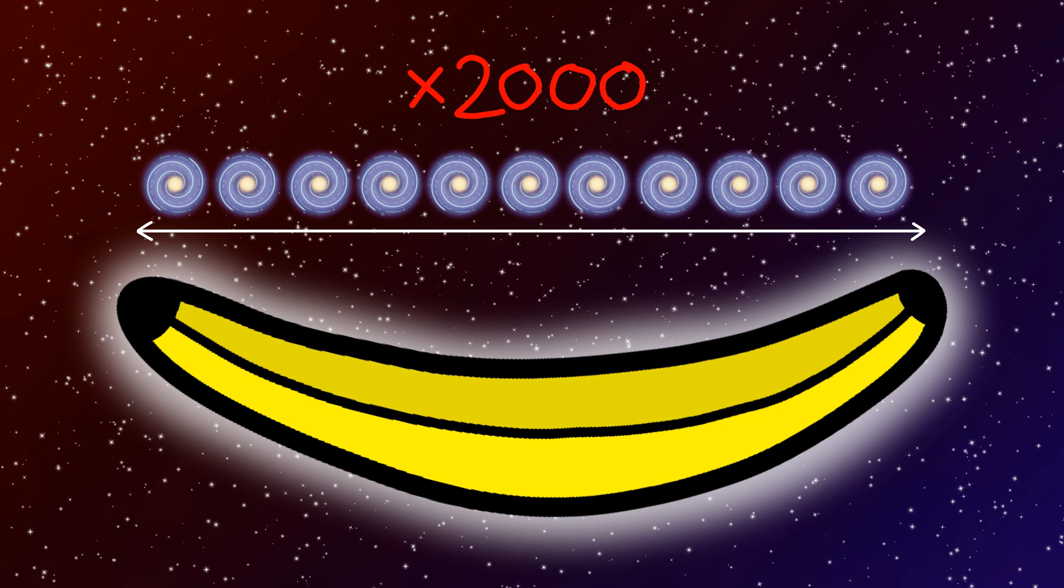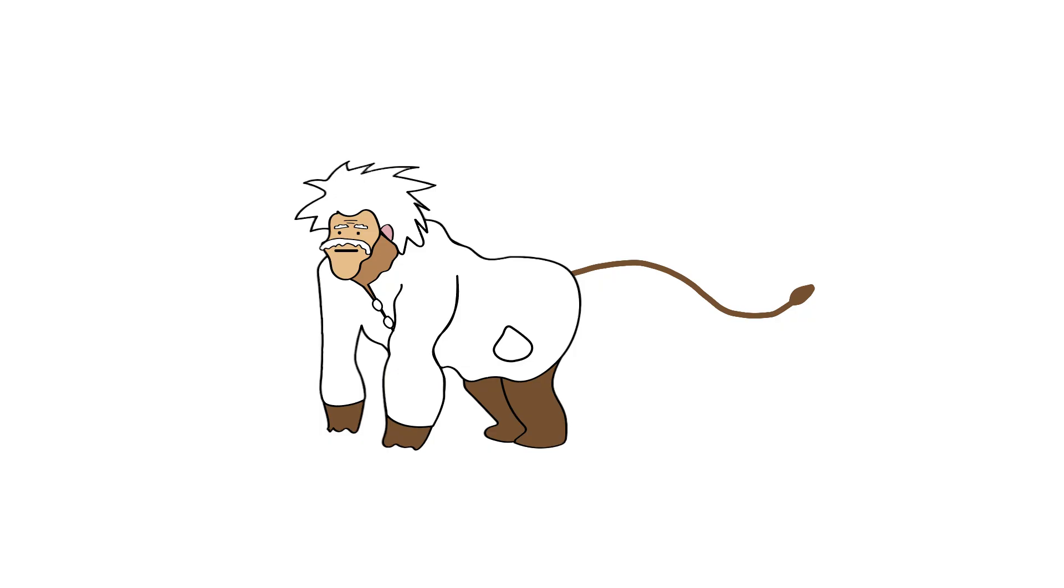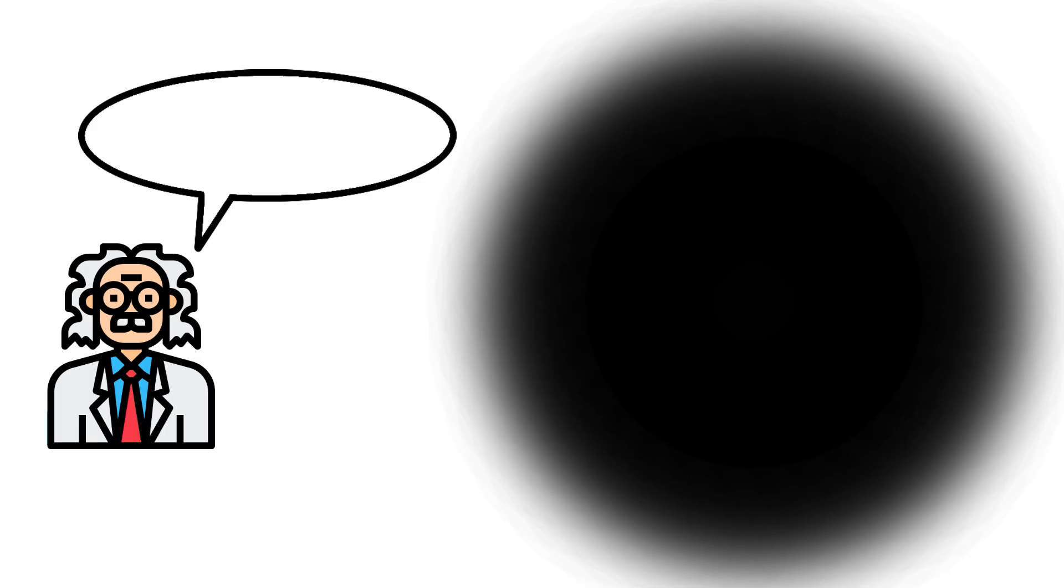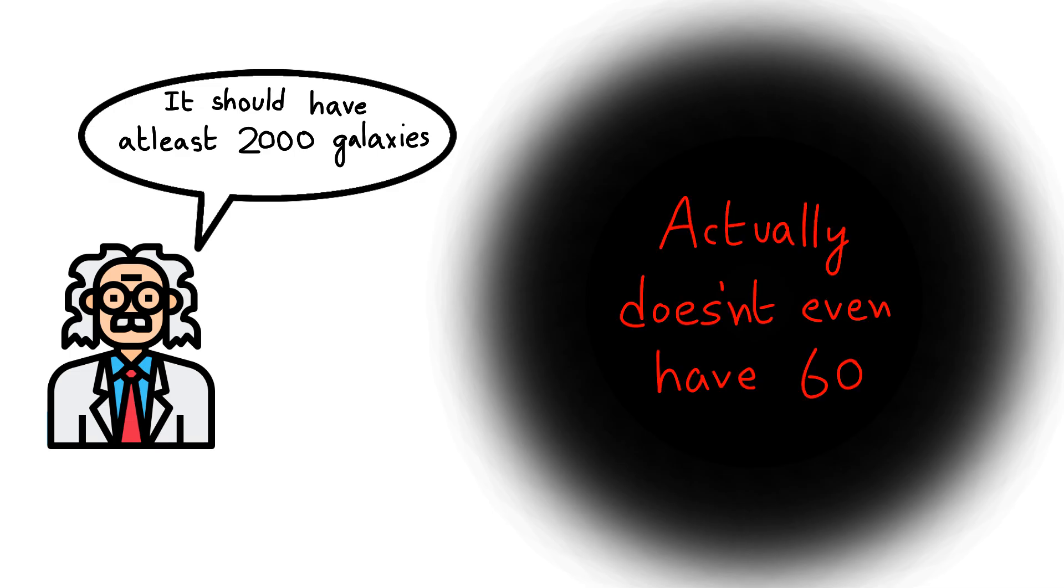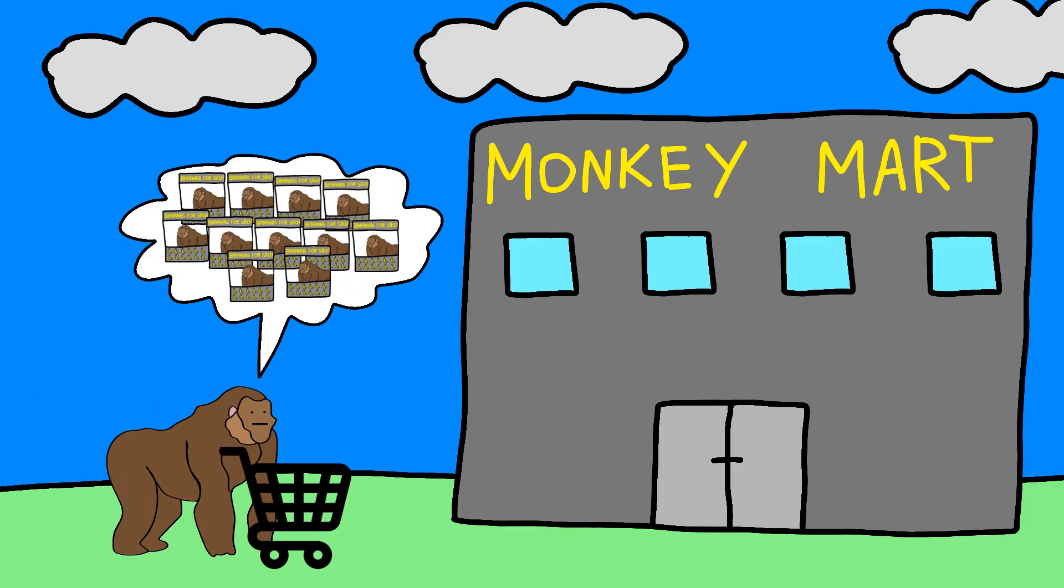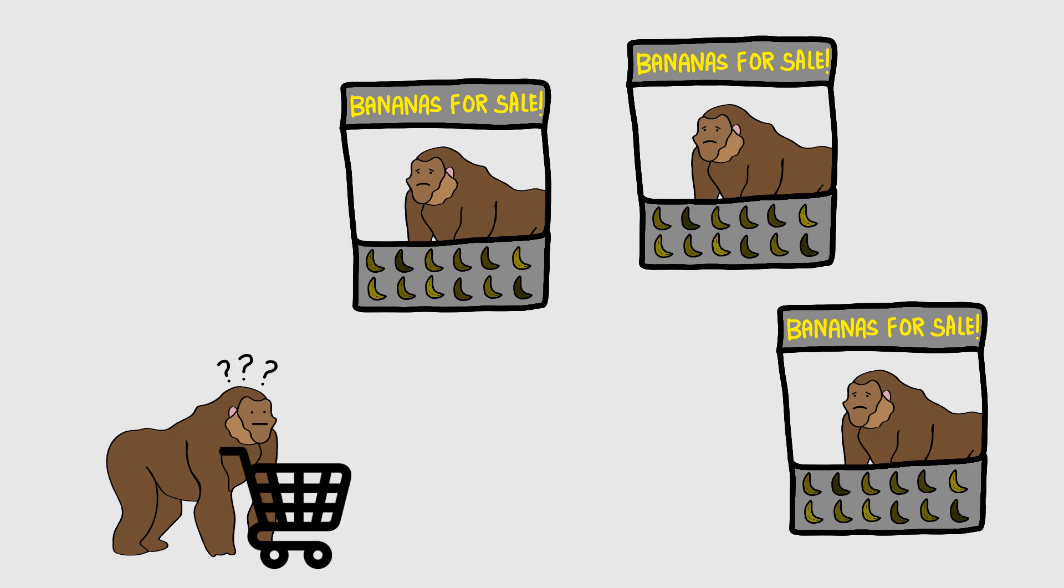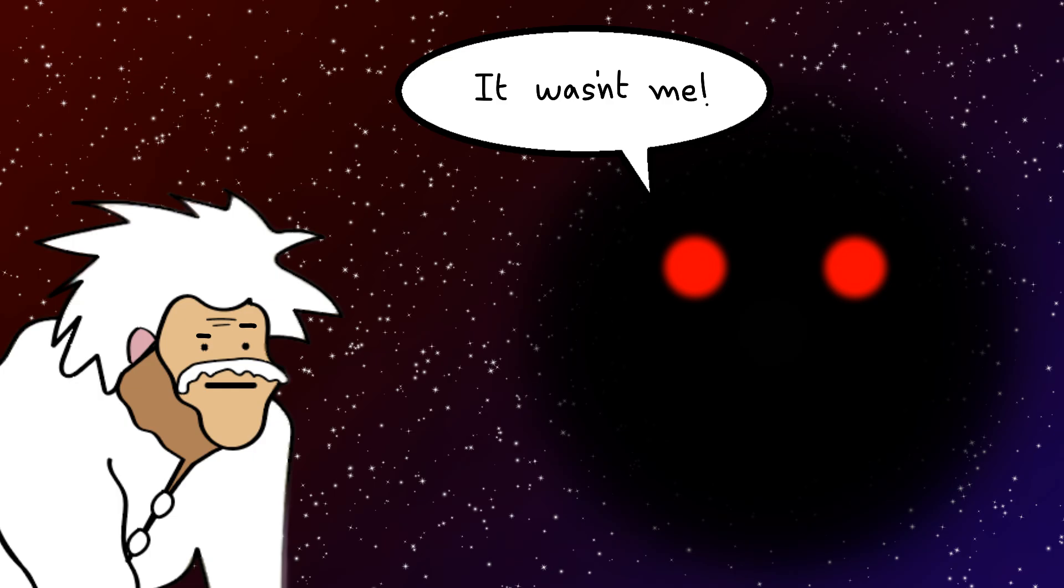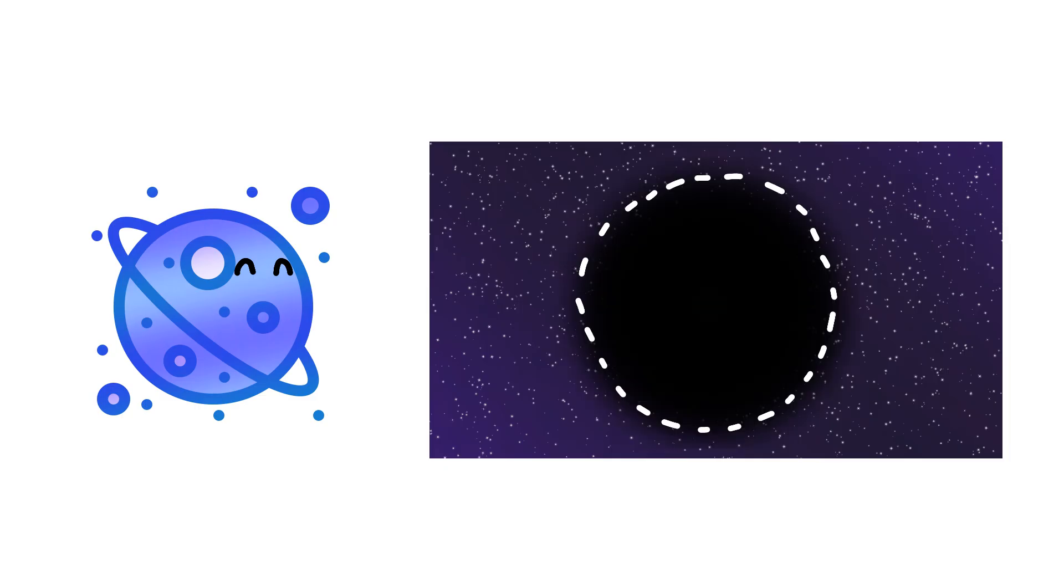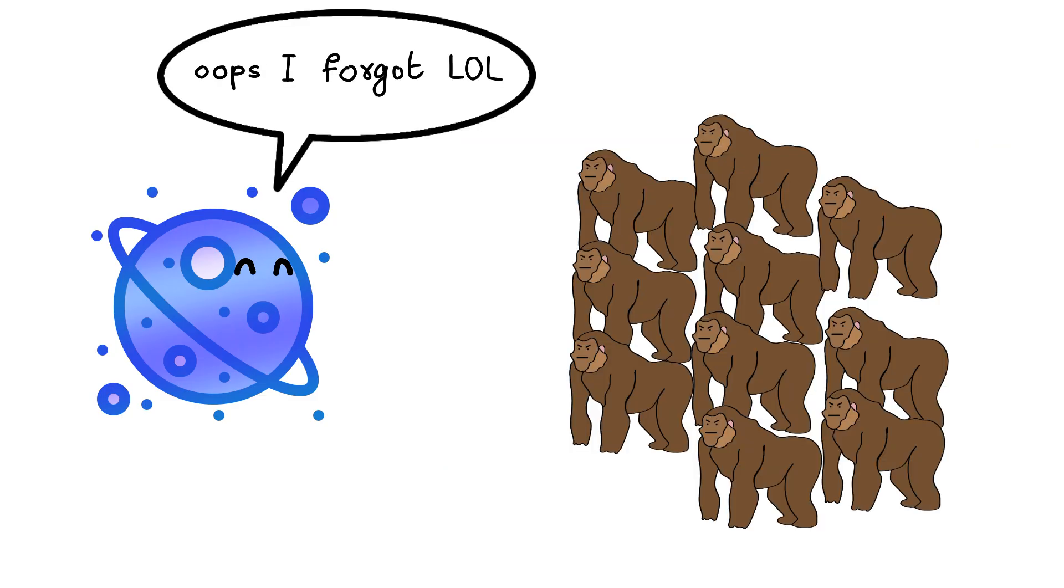But here's what makes monkey's tail curl with fear: this void shouldn't exist. Smart human scientists say a region this big should have 2,000 galaxies. Instead it has fewer than 60. That's like going to monkey market expecting 2,000 banana vendors and finding only three sad monkeys with bruised fruit. Something ate all the galaxies, or maybe they never formed at all. Nobody knows why. It's like the universe decided to carve out a giant bubble of pure emptiness and forgot to tell anyone why.